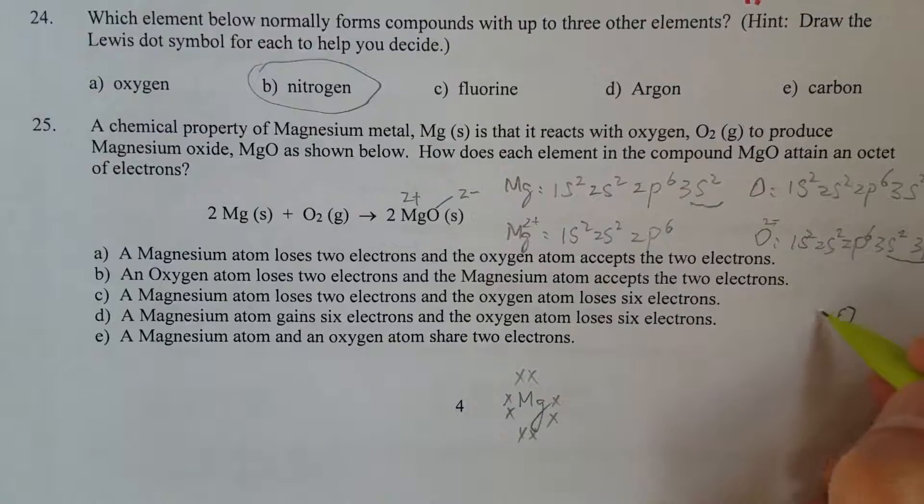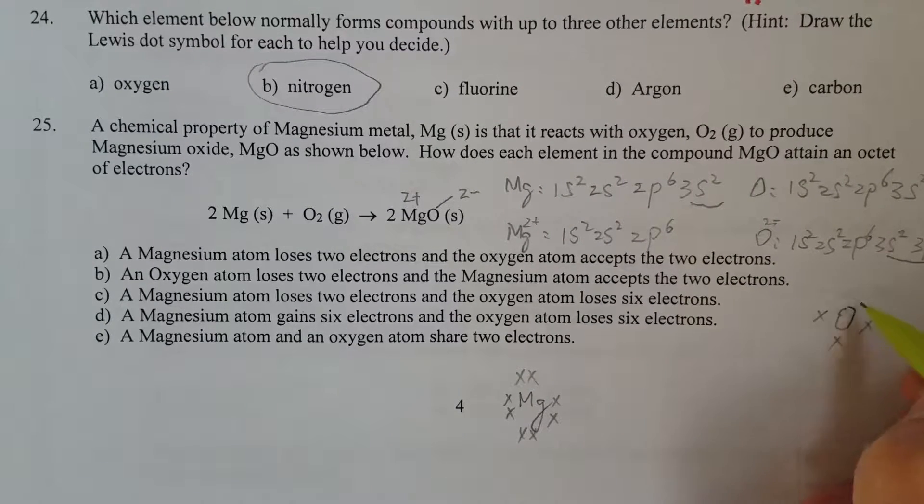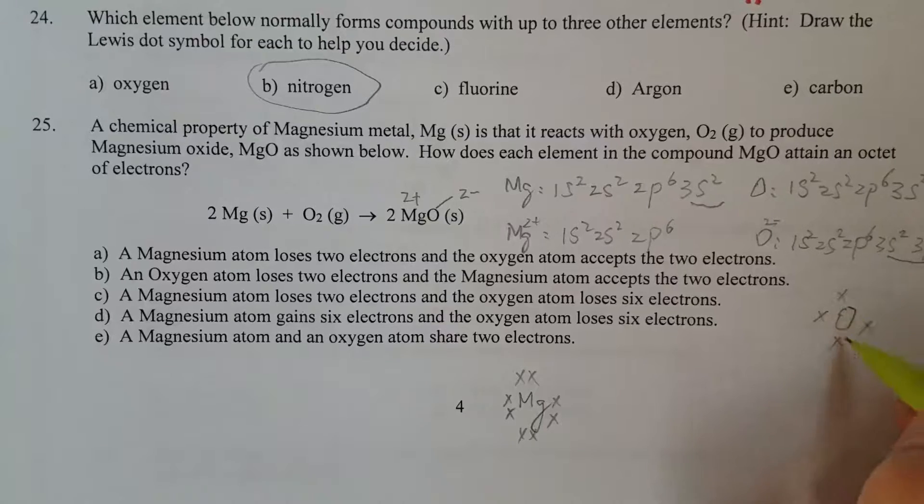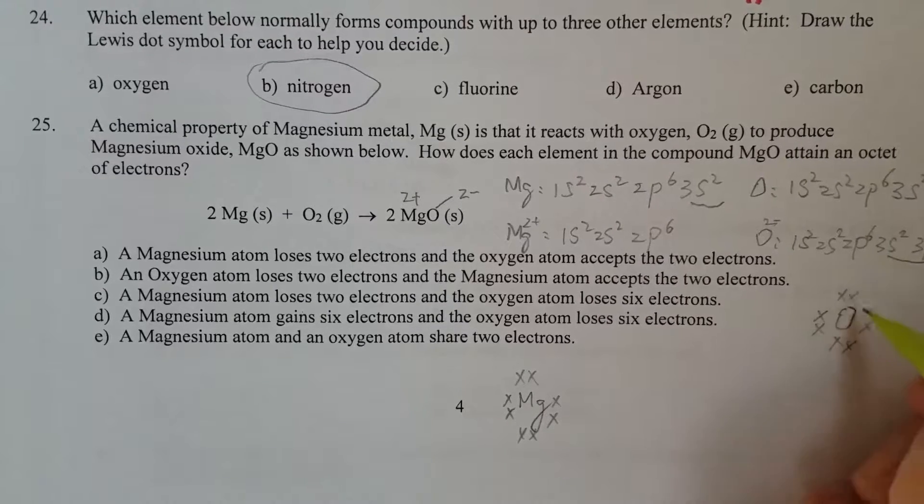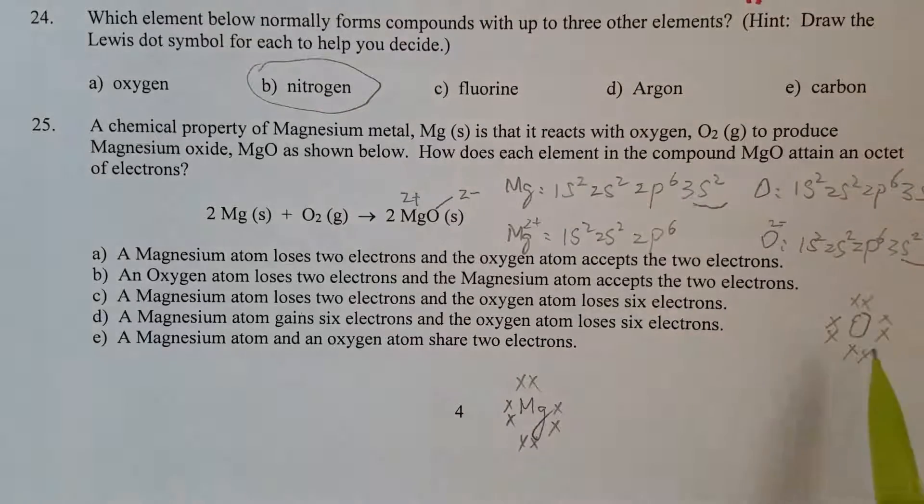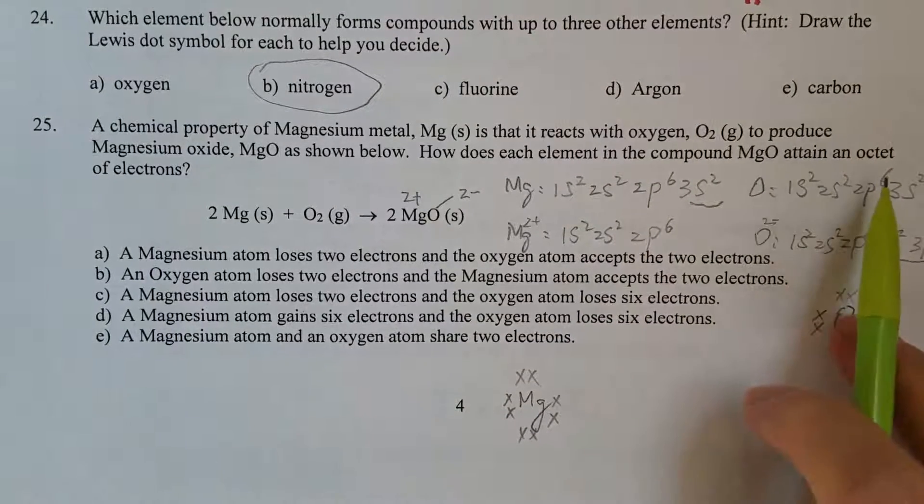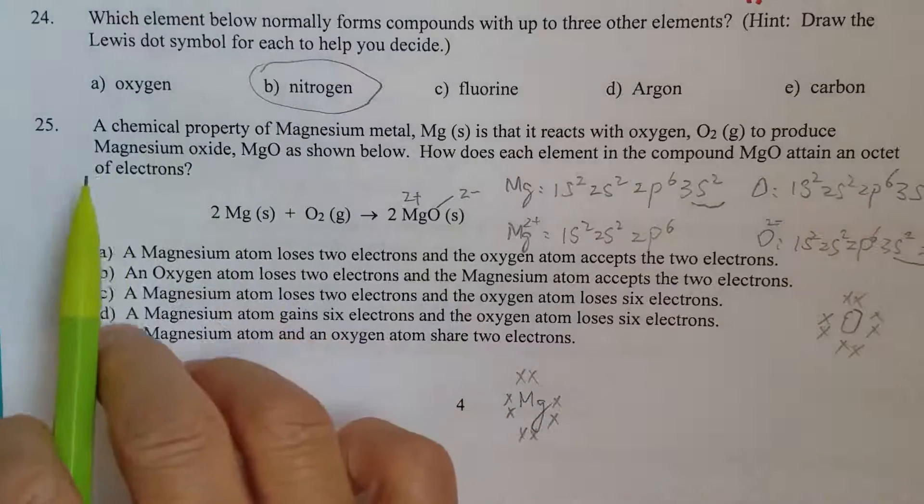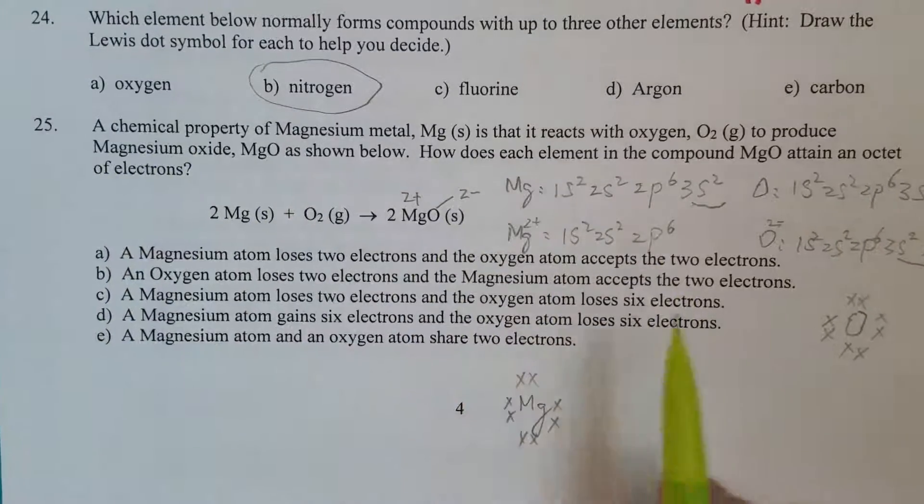Then if it's 8, you see: 1, 2, 3, 4, 5, 6, 7, 8. That's how oxygen attained its octet electrons.